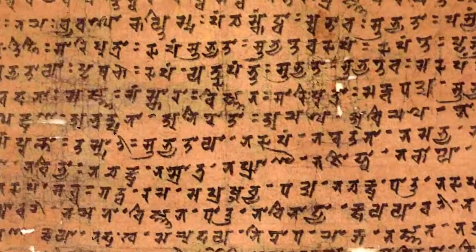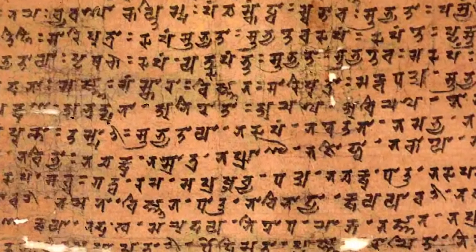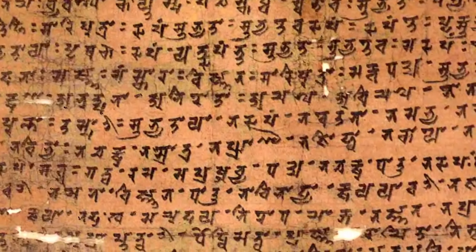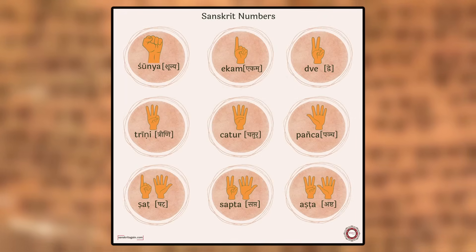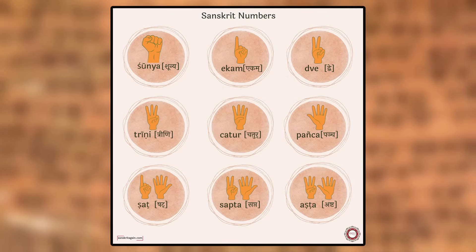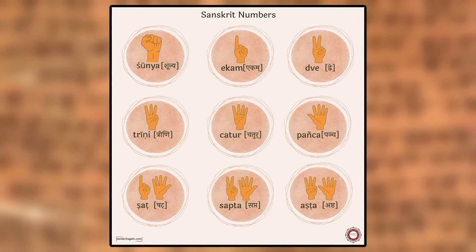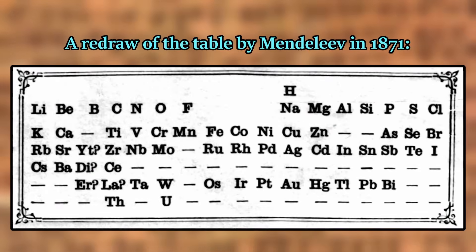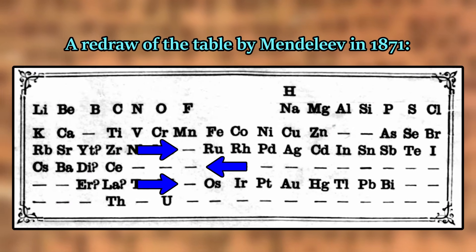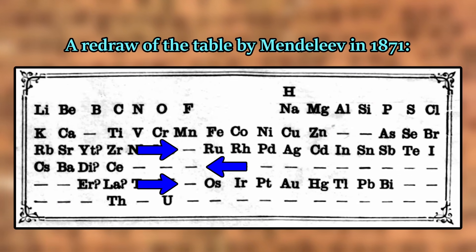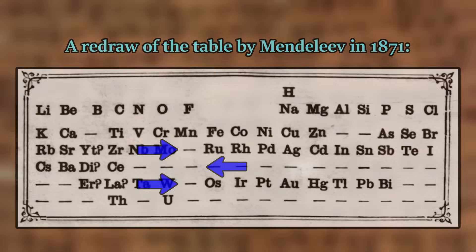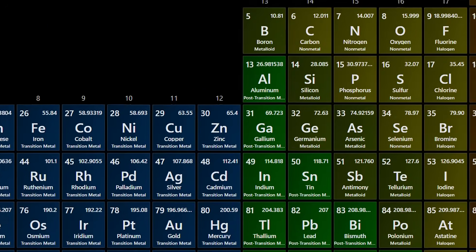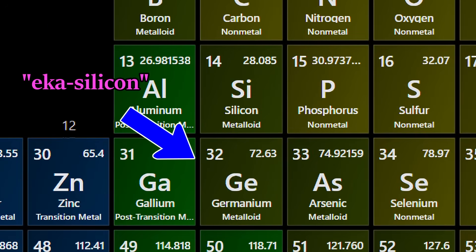When making these predictions, he named the missing elements based off of other known elements at the time, using the Sanskrit names of the digits 1, 2, and 3 as prefixes based on whether they were 1, 2, or 3 places down from the known element of the same group in his table. So, for example, germanium was named Eka-silicon before its discovery, for it was one spot away from silicon on the periodic table and was in the same group.